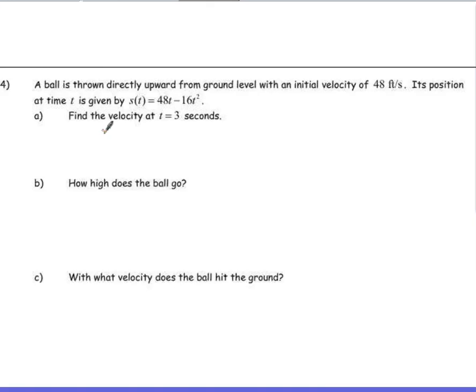Alright, so if we take the derivative of the original function, we've got s prime of t equals 48 minus 32t. And we're taking that derivative on part a because we want to find a velocity. So we could set that up as our velocity function. I'm trying to find the velocity at t equals 3 seconds. We'll take 3, simply plug in. Velocity at 3 seconds is going to equal 48 minus 32 times 3.